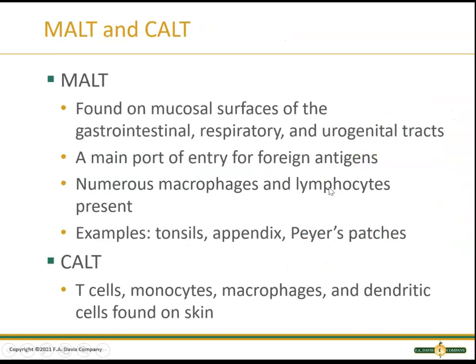The MALT — mucosal associated lymphoid tissue — is found at mucosal surfaces: mouth, nose, respiratory tract, and genital area, which are the main entry ports for foreign antigens. This is where you'll find many lymphocytes and macrophages. Tonsils and Peyer's patches are lymph nodes actually located in the GI system. The CALT is found on the skin, where you look for T cells, monocytes, and macrophages — you can actually see immune responses occurring on the skin itself.